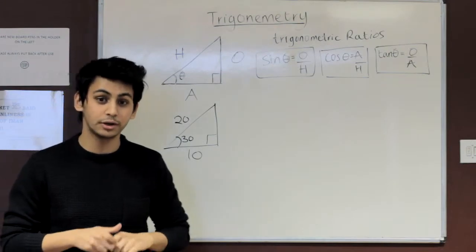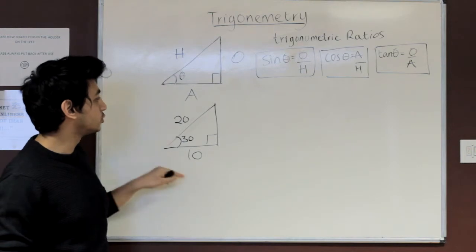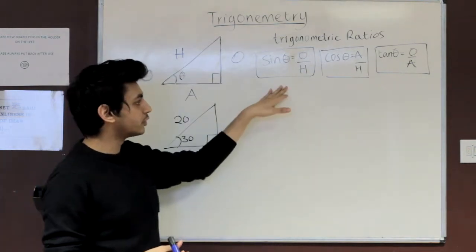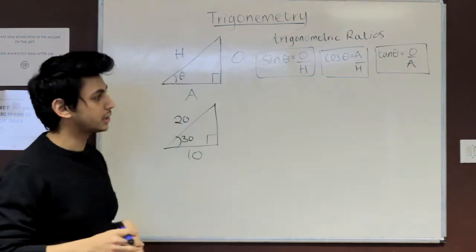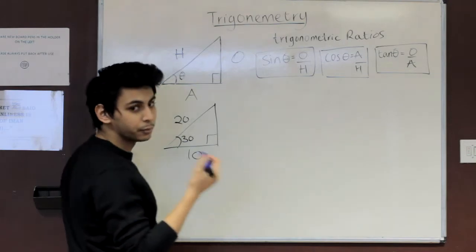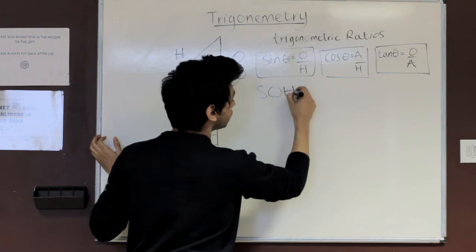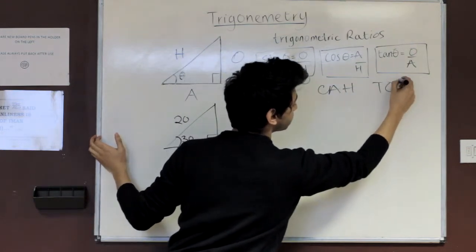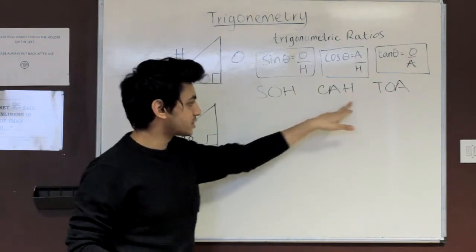The reason why we need to know how to label our triangles correctly is because we need to know how to use these values and use our trigonometric ratios. A generic way to remember these ratios, because you're not going to be given these in the exams, is the phrase SOHCAHTOA. I'll explain how we use these ratios in a bit, but for now I just want you to remember SOHCAHTOA.